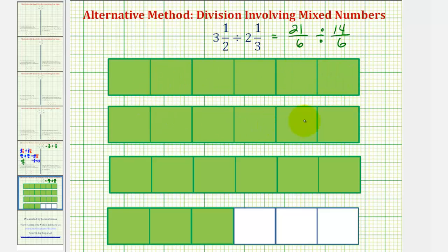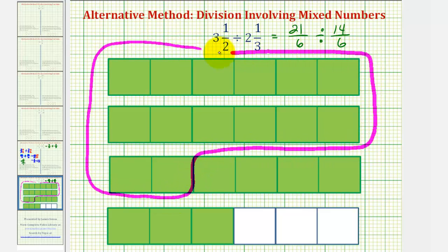Our goal here is to determine how many 14-sixths there are in 21-sixths. So if we count up fourteen pieces, that would be one 14-sixths. Notice here's six pieces, here's another six pieces, that's 12-sixths, so two more pieces would make up one 14-sixths.